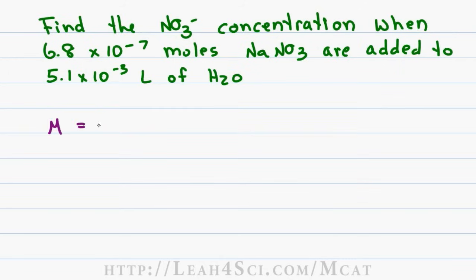We want to solve for molarity, which is moles per liter. Pulling the numbers out of the question, we get an equation that looks like this: 6.8 times 10 to the minus 7 divided by 5.1 times 10 to the minus 3. This throws off so many students because they make it harder than it has to. So let's talk about the rules, then let's solve the problem.